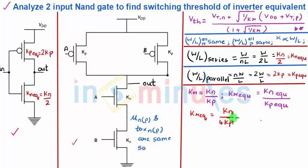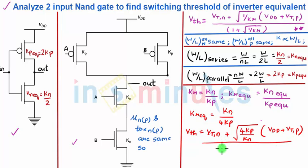Let's substitute this in the double star equation. We will get VTH equal to VTN plus 4 times KP by KN VDD plus VTP upon 1 plus square root of 4 times KP by KN.